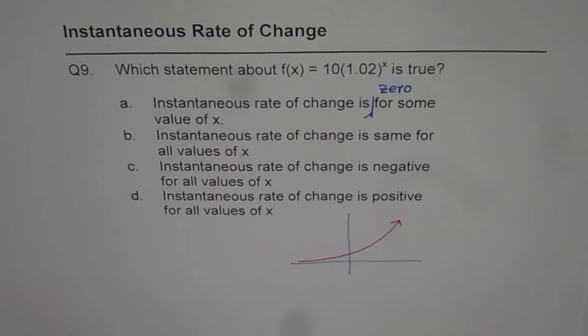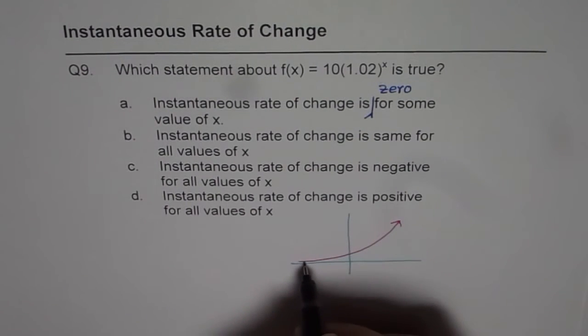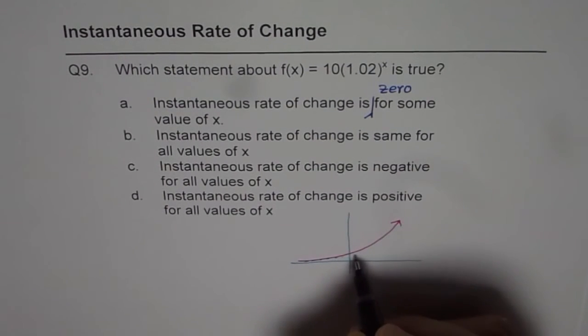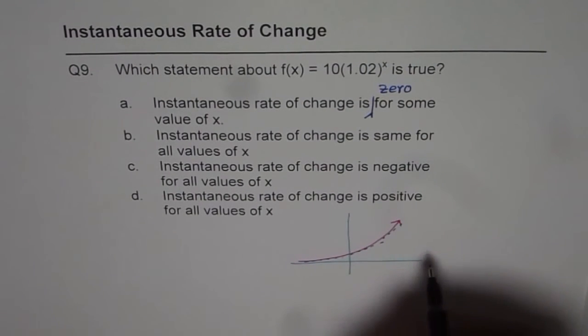Since the function is always increasing, instantaneous rate of change will be always positive. If I draw a tangent at any point, it will have a positive slope increasing towards the right, right?